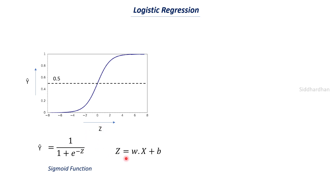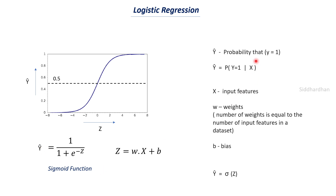Z is nothing but z = w·x + b, which is similar to the equation of a straight line: y = mx + c, where m represents the slope and c represents the intercept. Instead of slope and intercept, we use weight and bias as our notation, so we write the line equation as wx + b, which is equivalent to a linear regression equation — which we discussed in the previous video.